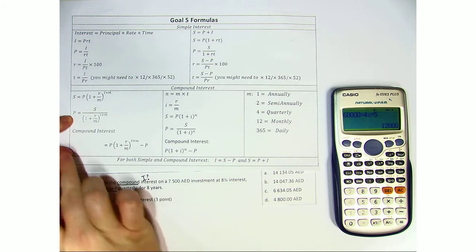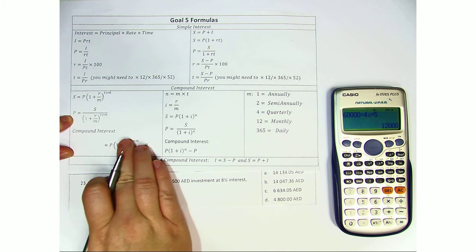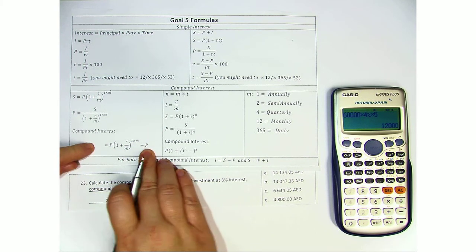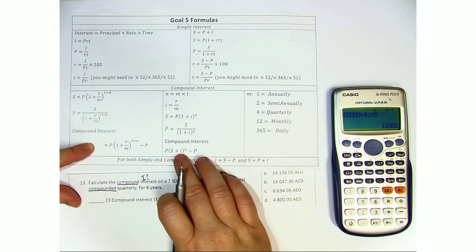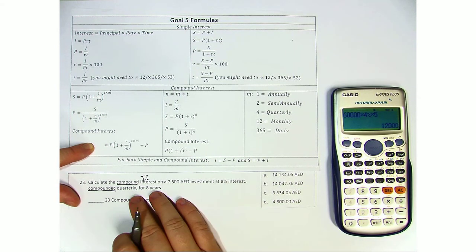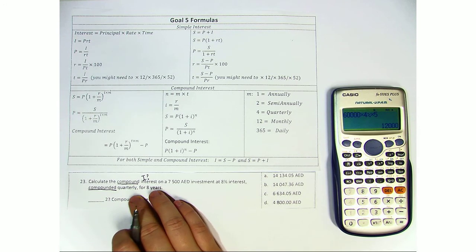So when you look here, the compound interest is found by doing P, open bracket, 1 plus R over M, raised to the T times M, minus P. It's also found by using an N and I formula, either one that you feel comfortable with you can do. I'm going to go ahead and focus on this formula up here.